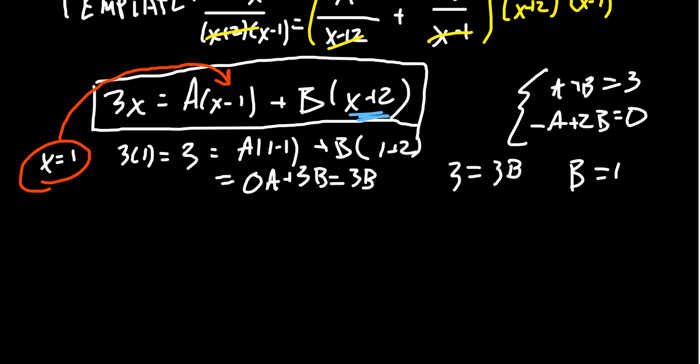Take x+2. What makes x+2 go to 0? Well, that would be x is equal to negative 2. And so if we do that, let's try this cool value.